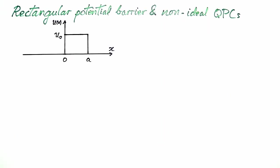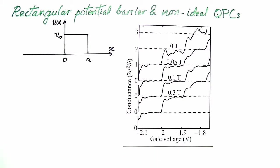In this exercise we will solve the problem of transmission through a rectangular potential barrier. The results will help us understand deviation from perfect conductance in a non-ideal quantum point contact such as shown in this figure.